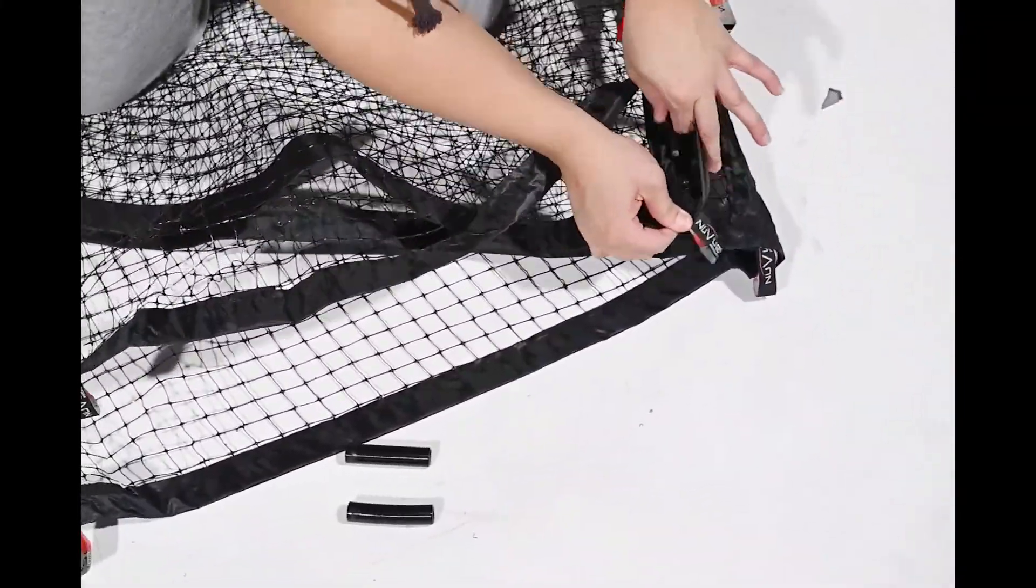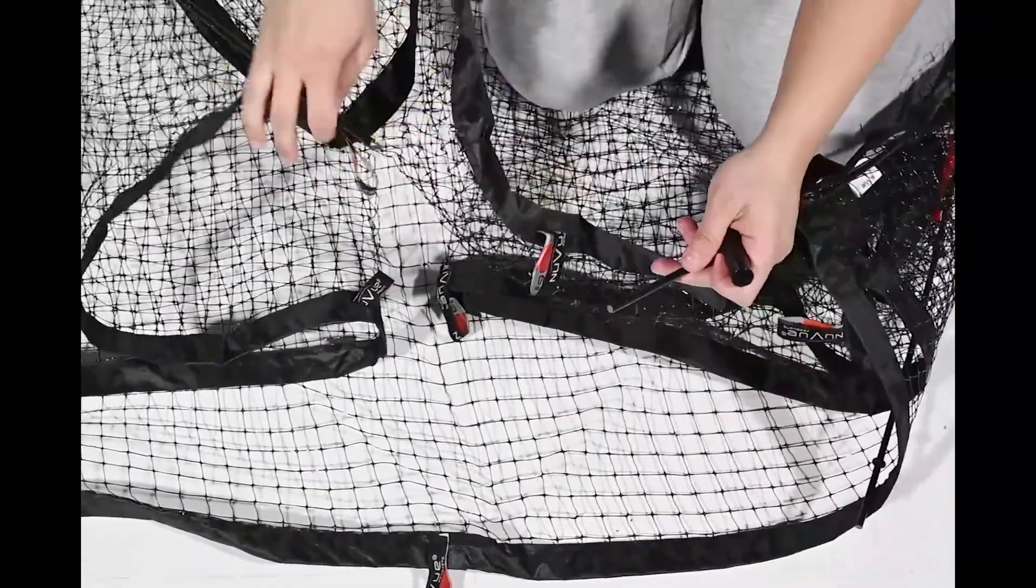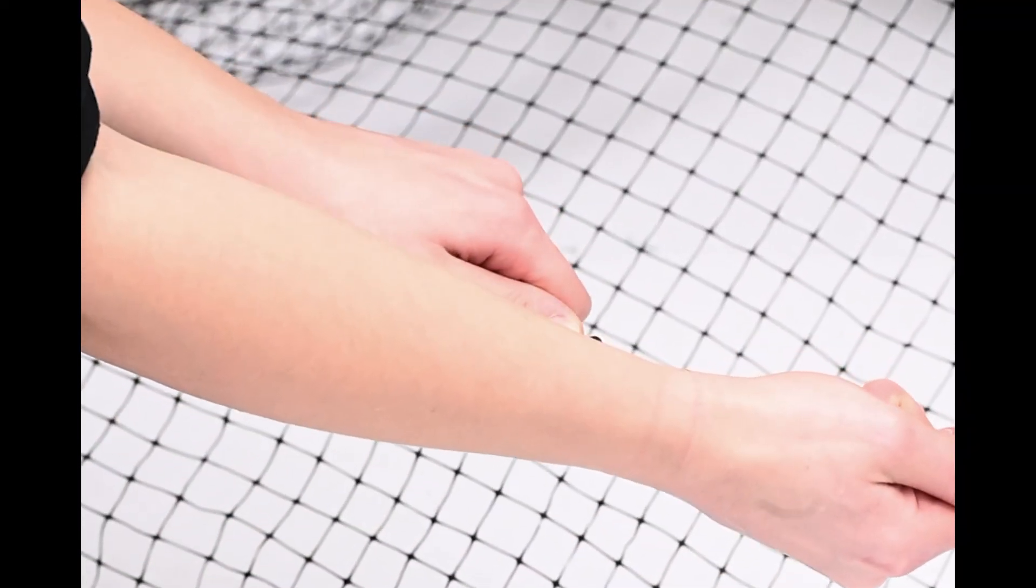Step 2: Remove the rods from the corner pockets and install the plastic connectors to each end of the same rod so that the rod now forms a circle. Place both circles together.